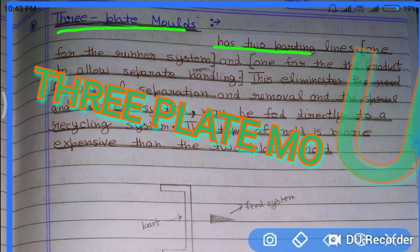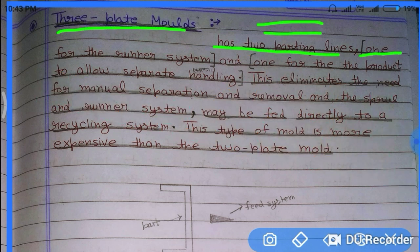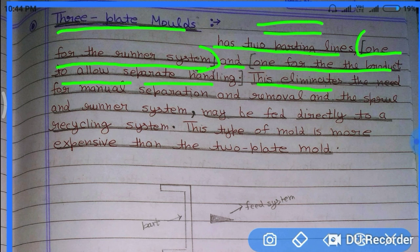The three-plate mold has two parting lines: one for the runner system and one for the product, to allow separate handling. This eliminates the need for manual separation of the feed system, and the runner system may be easily and automatically fed directly to a recycling system.